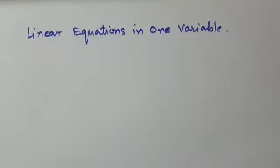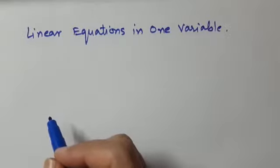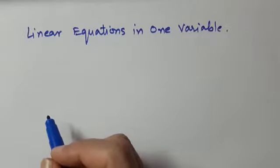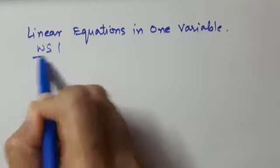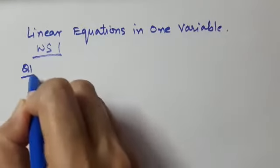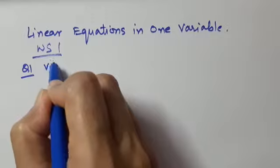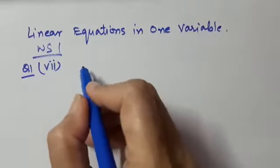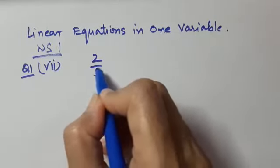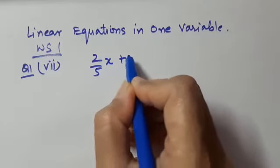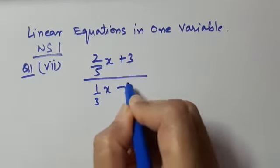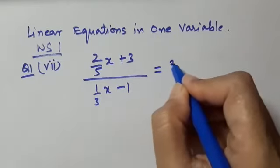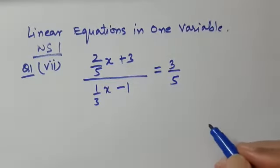Hello dear students, let us discuss some more questions on solving equations and verification of the answer. We are doing worksheet number 1, question number 1, and I am taking the 7th part. It says we need to solve: 2 upon 5x plus 3 divided by 1 upon 3x minus 1, equal to 3 upon 5. Let us solve this.